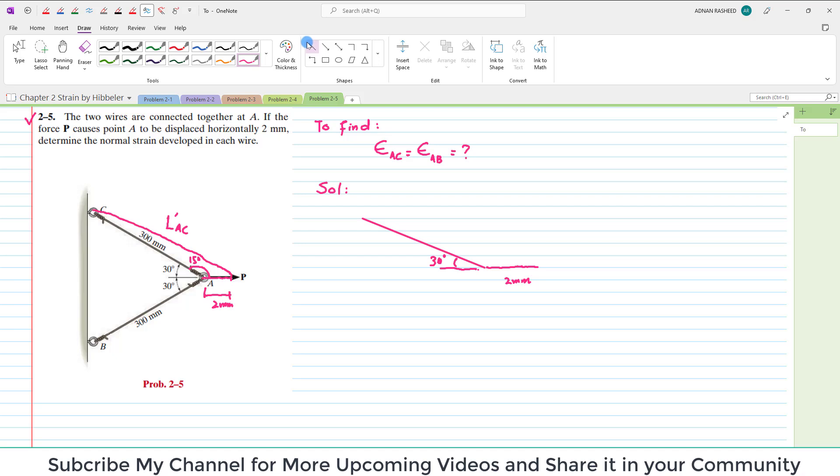This is 2 mm displacement. This wire will move like this. And this is new length L dash A C. Clear. This angle is equal to 150 degrees. And this length, the length of this wire is 300 mm. Now by using this formula.